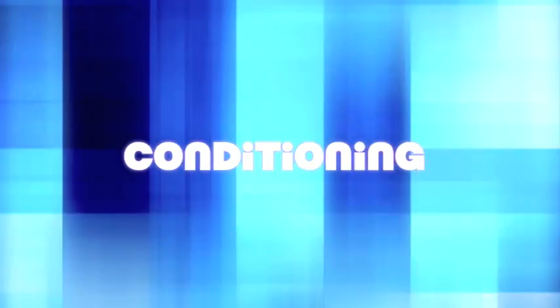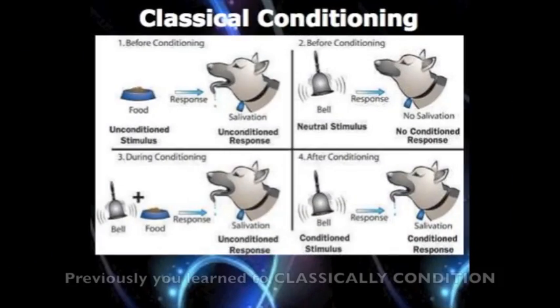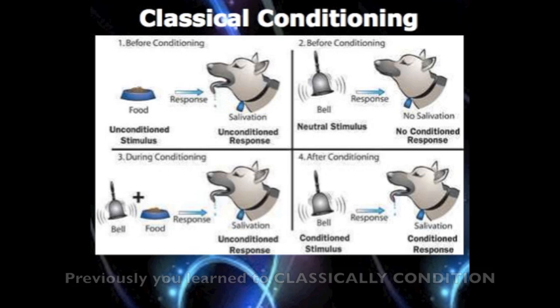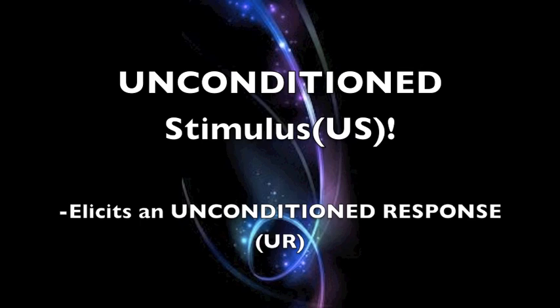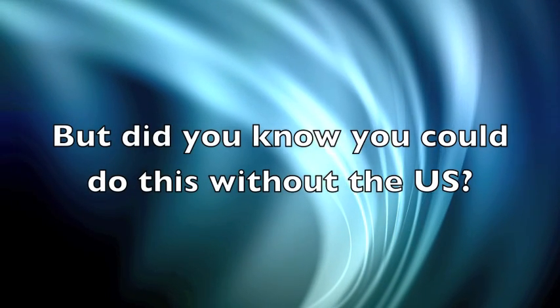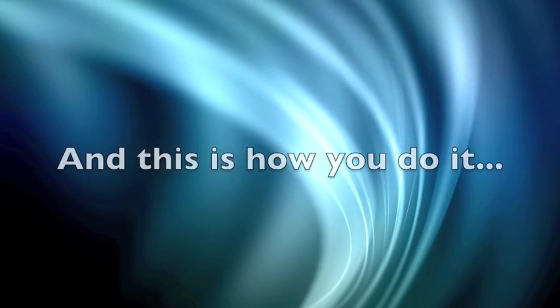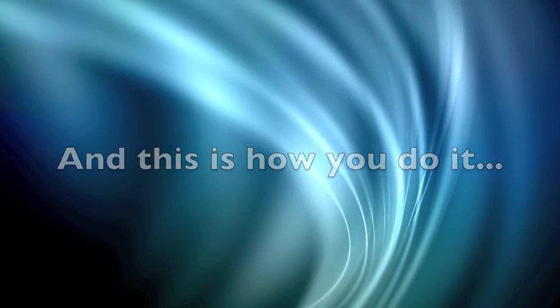Second Order Conditioning. Previously, you want to find the same condition where you pair a new stimulus with one that's unconditioned. But did you know you could do this with a bigger one? And this is how you do it.